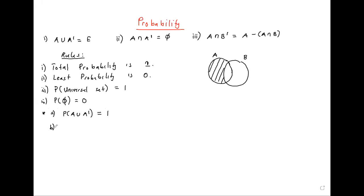Which part don't you understand? The relation — the relation of the set, probability being related to the set, and the reason.